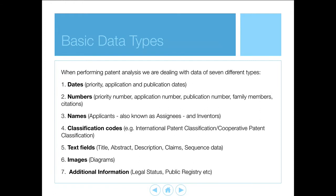We have seven basic data types. First, we have a range of dates. Second, we have a range of numbers which serve as unique identifiers for documents and allow us to track the relationships between documents. Third, we have names — notably the names of applicants, who are also commonly called assignees, and the names of inventors. We also have the names typically of patent lawyers or attorneys. Fourth, we have classification codes such as the International Patent Classification and the Cooperative Patent Classification, which allow us to find documents in specific areas of the patent library system.